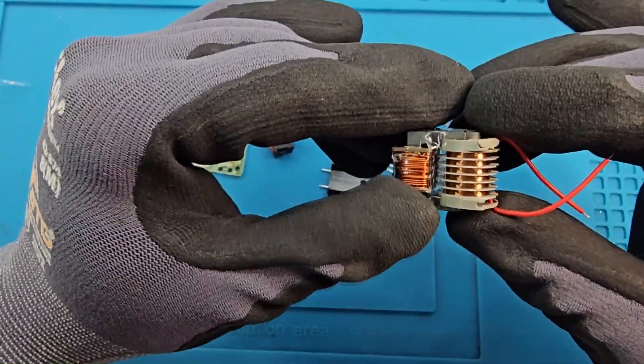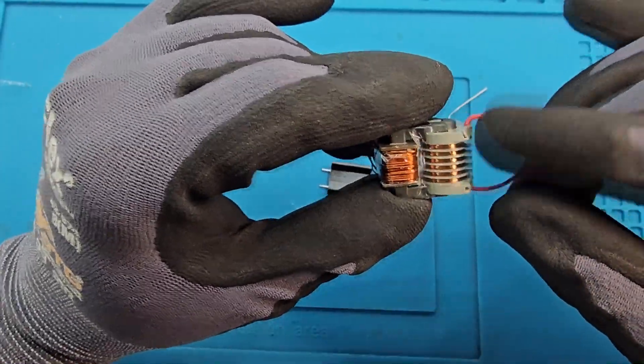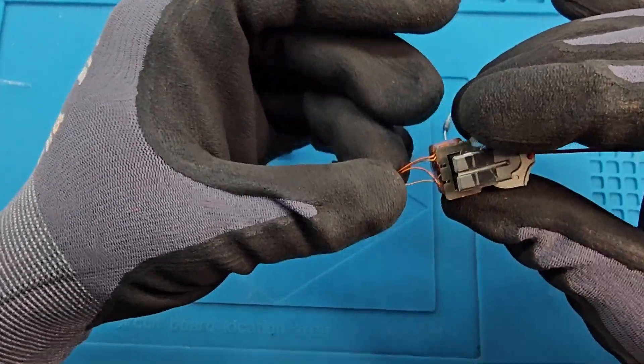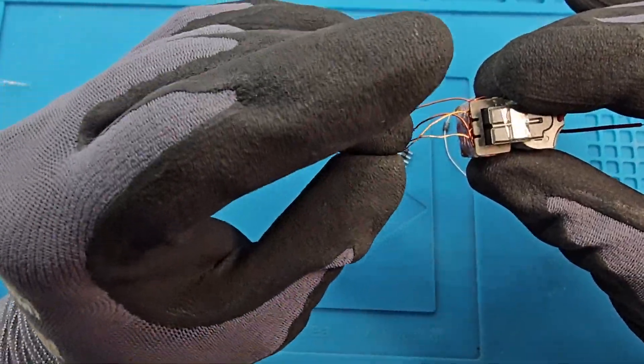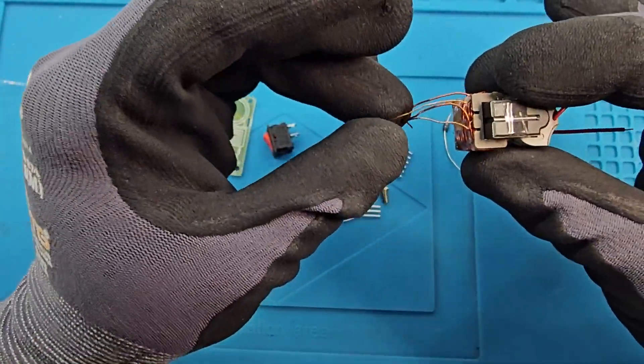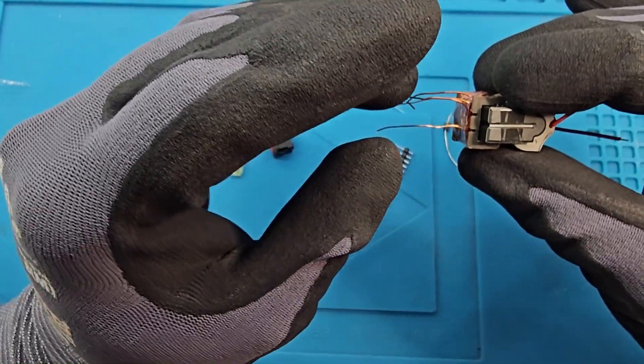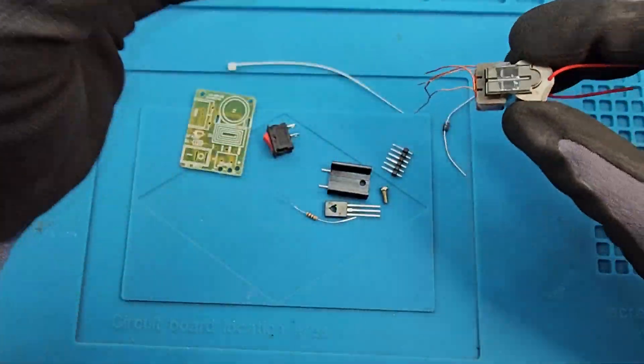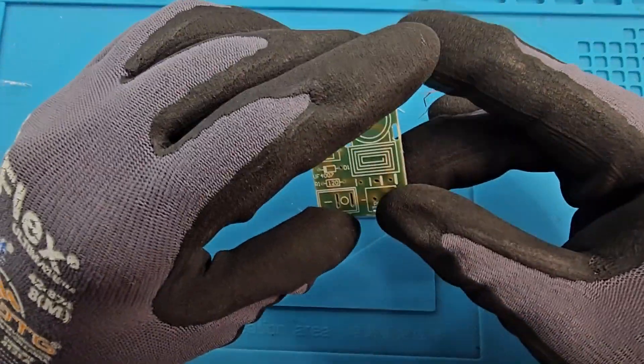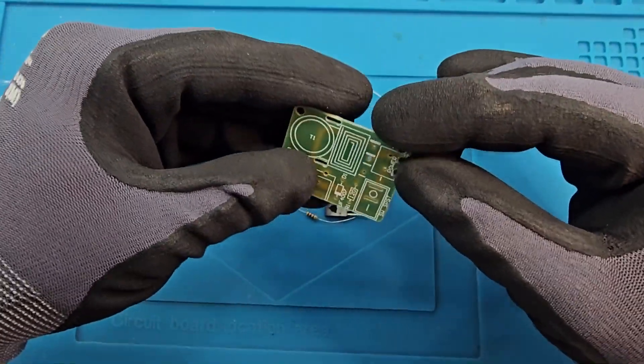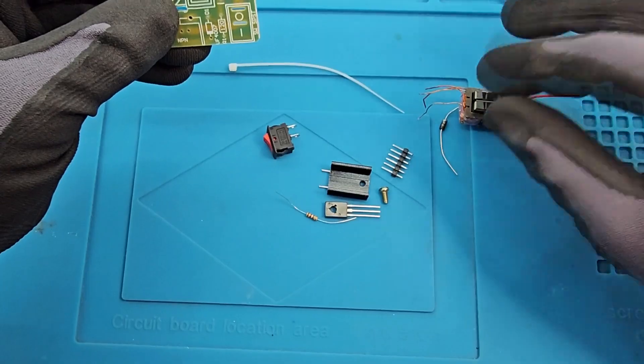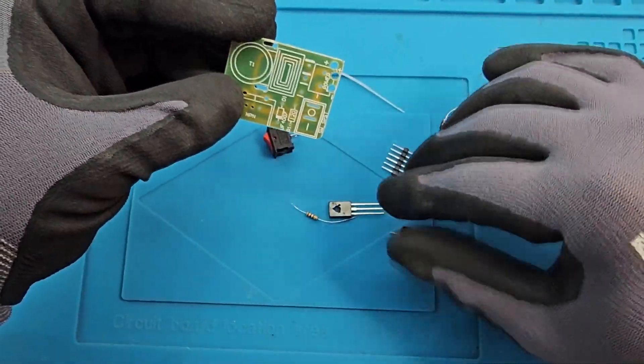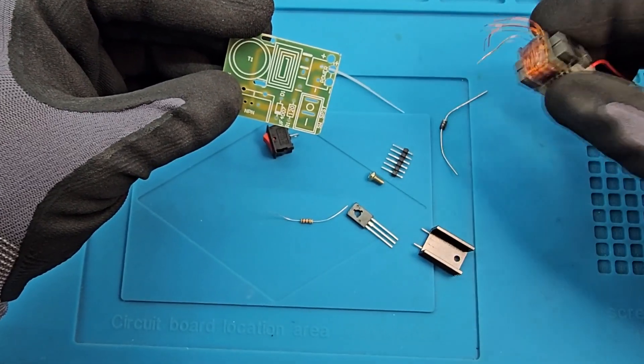So this is the high voltage transformer. This is the secondary side, and the transformer has two thin wires and two thick wires over here. So let's assemble this piece.